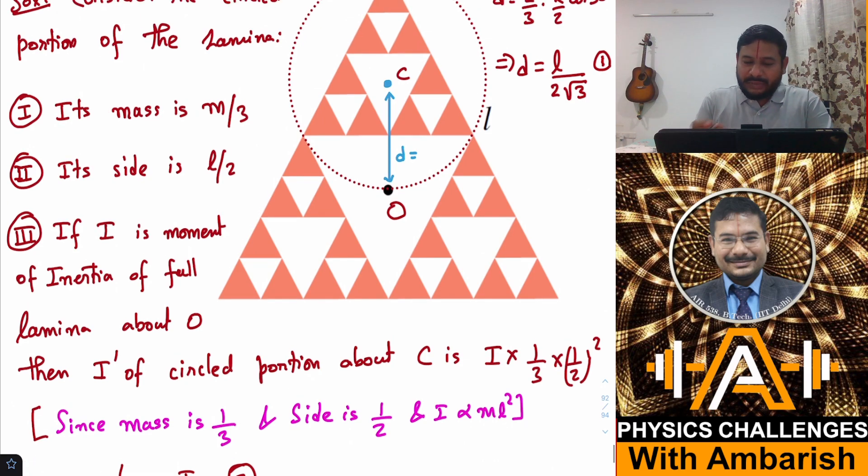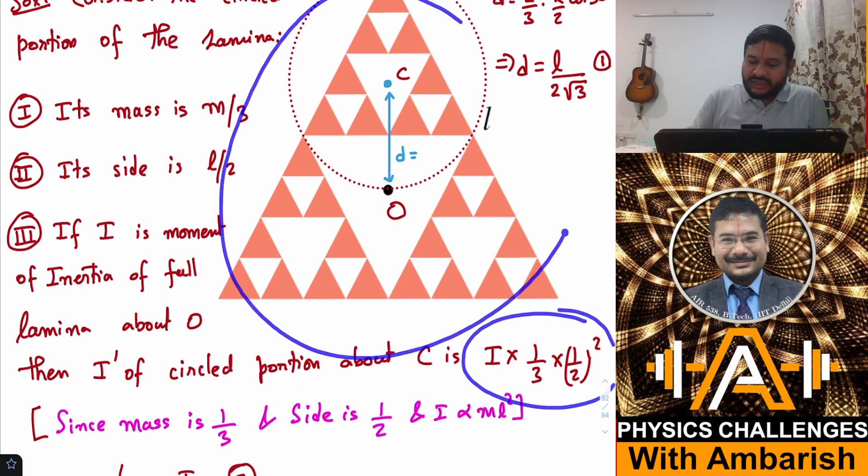Mass has become one third and the edge has become half. So by scaling argument we can say that we replace mass by a factor of 1/3 and linear dimension by factor of 1/2.